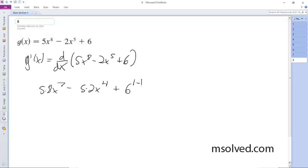6 raised to the 1 minus 1, so it's going to be 0. So it's going to be 40x to the 7th minus 10x to the 4th. And that's it.